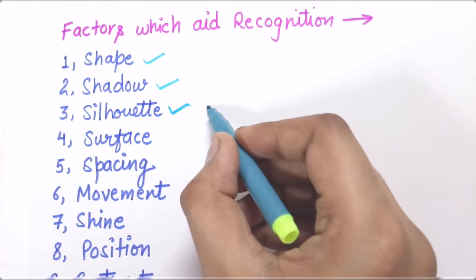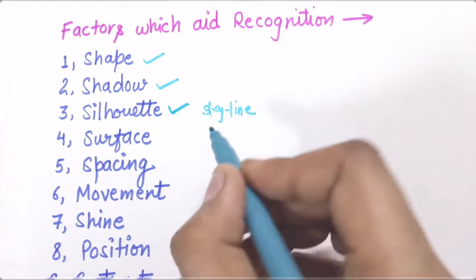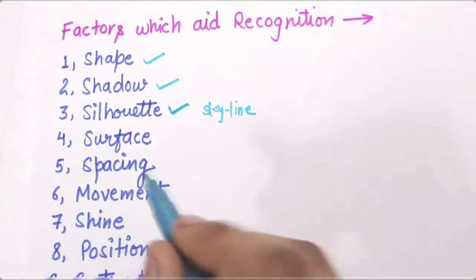If you read it, you will get a skyline term. You are looking at the skyline, which means you are looking at the silhouette.